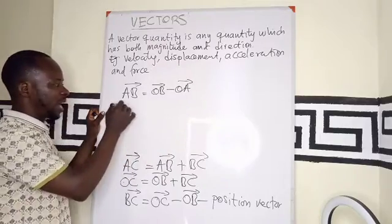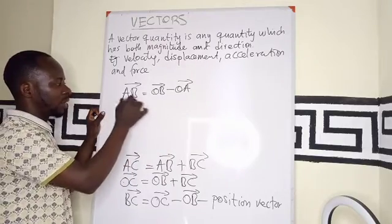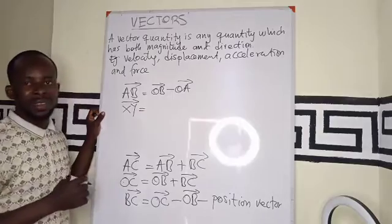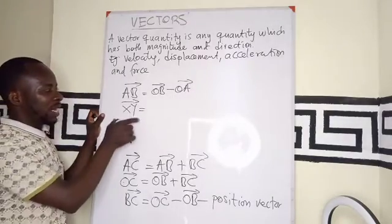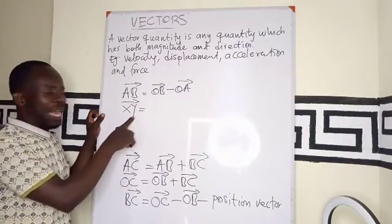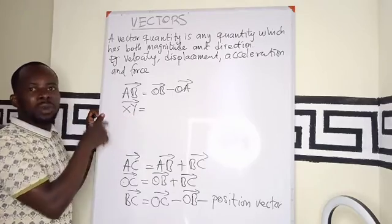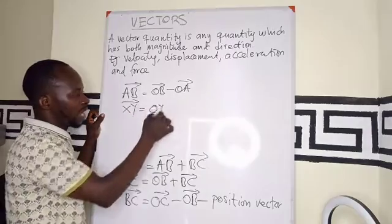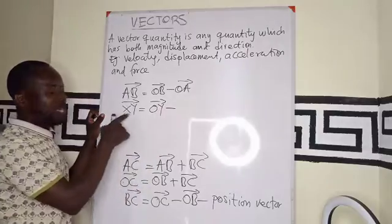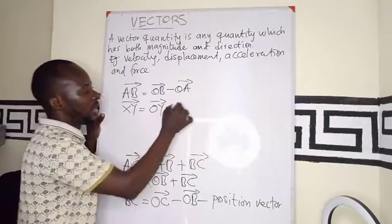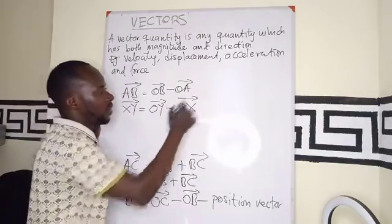In the same vein, if I have vector XY, the vector XY is going to be just the end point, the distance of the end point from the origin. So OY, then the distance of X from the origin we have OX. This is what we call position vector.